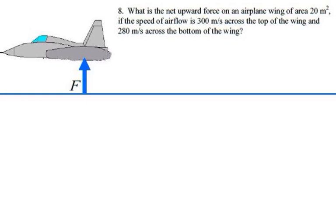Here's sample test for problem number eight. What is the net upward force on the airplane wing of area 20 square meters if the speed of airflow is 300 meters per second across the top of the wing and 280 meters per second across the bottom?